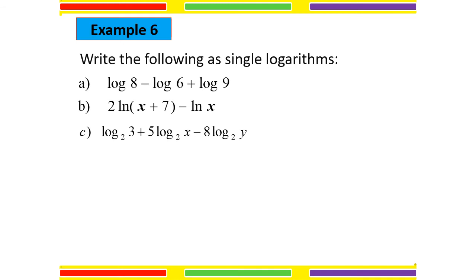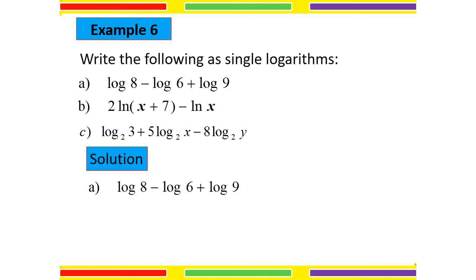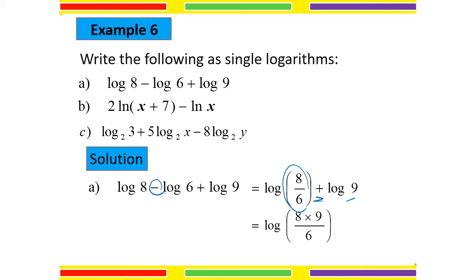Write the following as a single logarithm. For question A, we have log 8 minus log 6 plus log 9 — all base 10. Make sure the coefficient of each log is 1. Then combine: minus means divide, plus means multiply. So we get log of 8 times 9 divided by 6, which equals log 12.